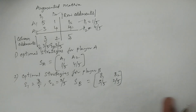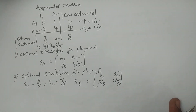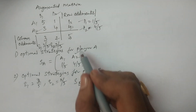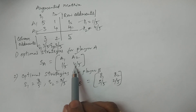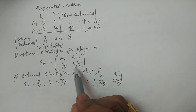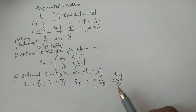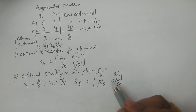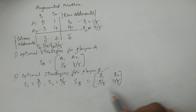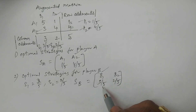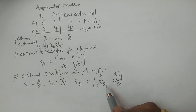This gives the probability for each player. Player A's strategy A2 has 4 chances out of 5. Player B's strategy B1 has 3 chances out of 5, giving probability 3/5 and 2/5 respectively.